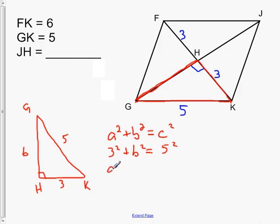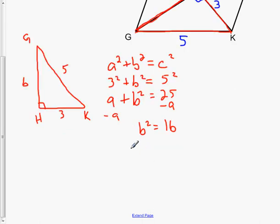So we get 9 plus B squared equals 25. And then if I want to solve for B squared, I would minus 9 from both sides. Subtract 9, I should say. 16, B squared is 16. And then to undo squared, we square root, and we get B equals 4.